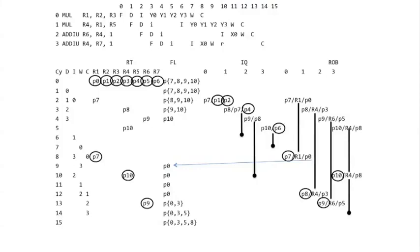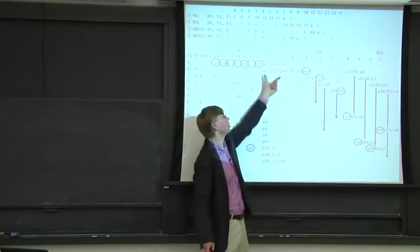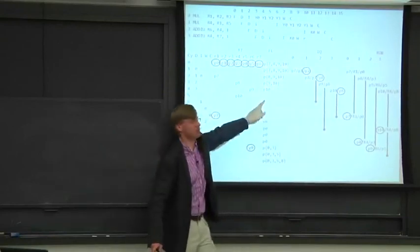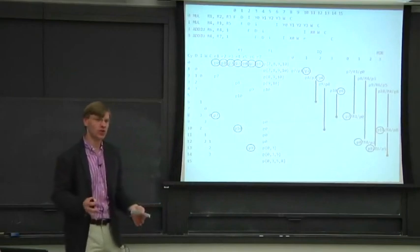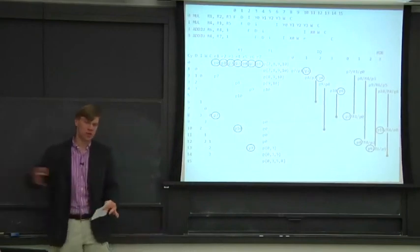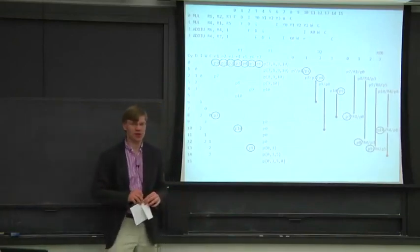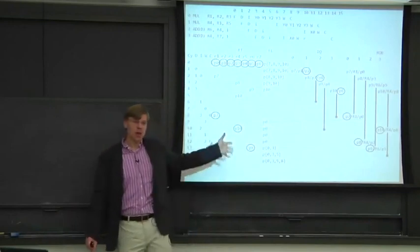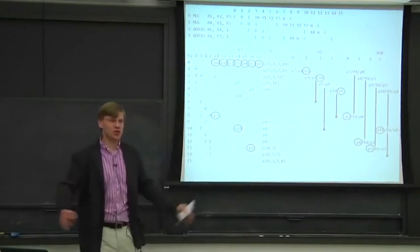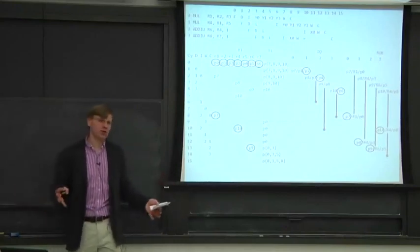As we allocate physical registers, we remove them from the free list. We start with four free registers and narrow it down as we do writes. At some point we could run out. When we run out of physical registers, we have to stall the pipe because we can't do any more renaming. When building machines, you need enough physical registers that you don't run out very often. With hundreds of in-flight instructions and only 64 physical registers, you might still run out, but the probability may be relatively low.